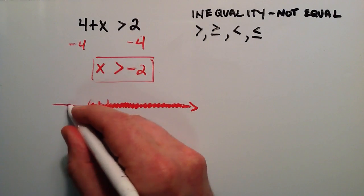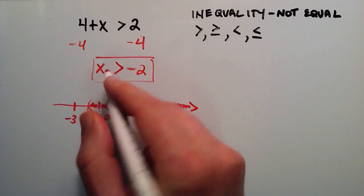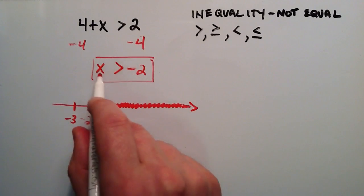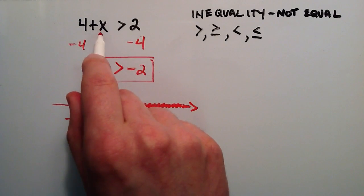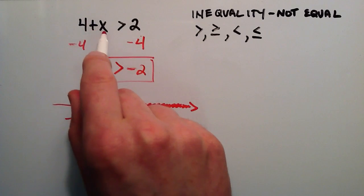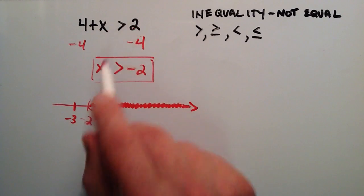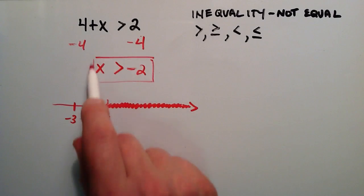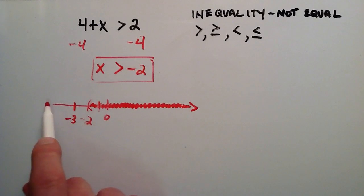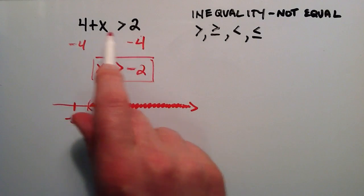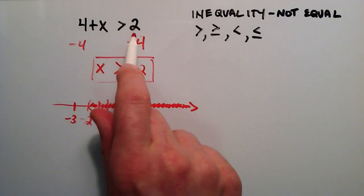If we were to choose a number out here, let's say negative 3 — well, it's not in this set. It doesn't satisfy this condition. Negative 3 is not greater than negative 2, so if we plug in negative 3, we end up with 4 plus negative 3, which is 1, and that is not greater than 2. So basically, anything defined in this set will produce a true statement, and anything that is not defined in the set will produce a false statement. These are the x's that will make the above statement true.